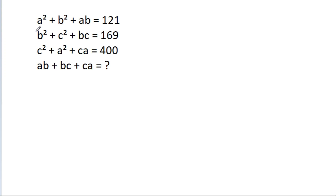In this video, we have given that A² + B² + AB = 121, B² + C² + BC = 169, and C² + A² + CA = 400. Then AB + BC + CA is equal to what?